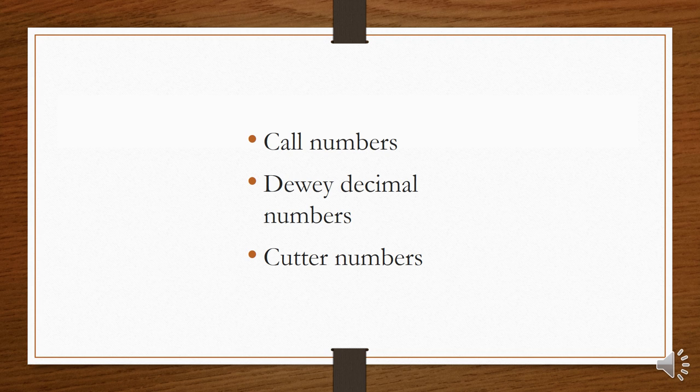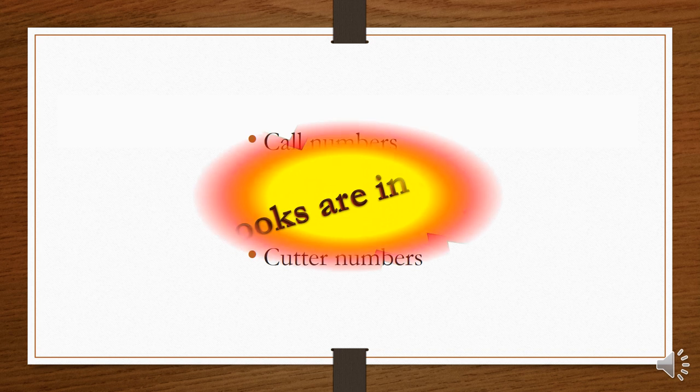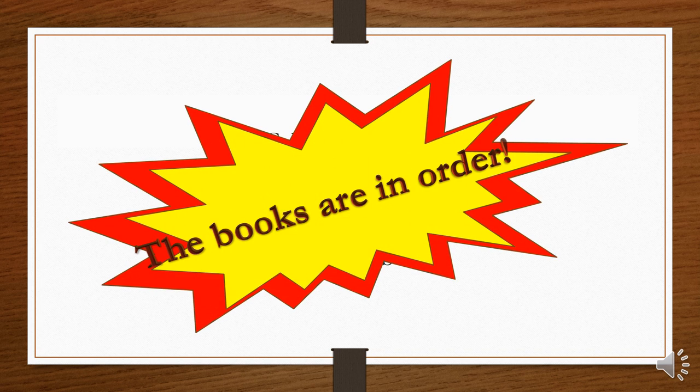Now we've talked about several things: call numbers, Dewey decimal numbers, cutter numbers. But what's most important to remember is that the books are arranged in numerical order on the shelves. So if you have the number you can get the book. Or again, ask a librarian for help.